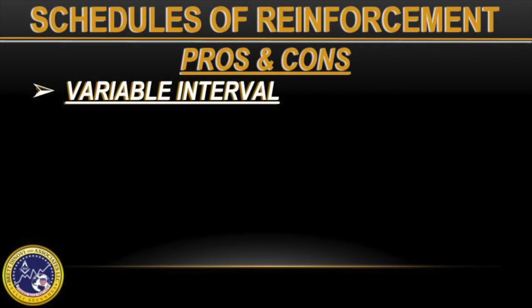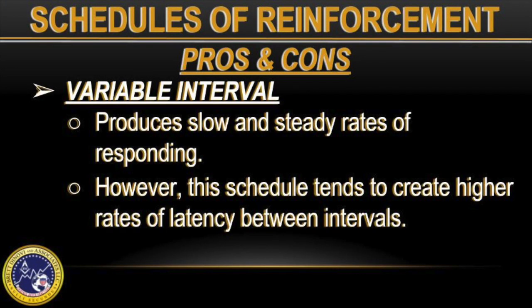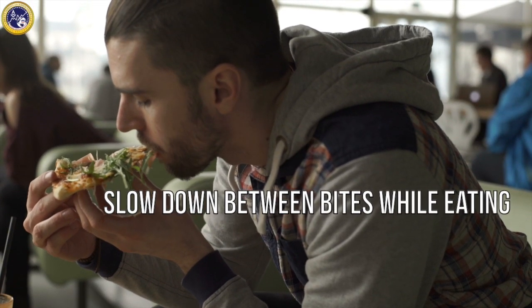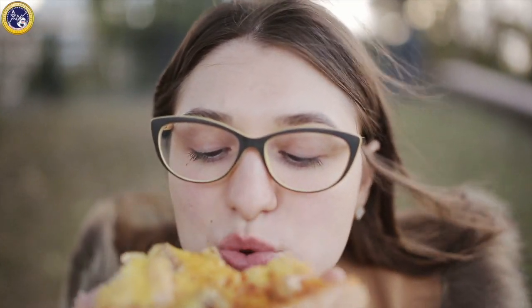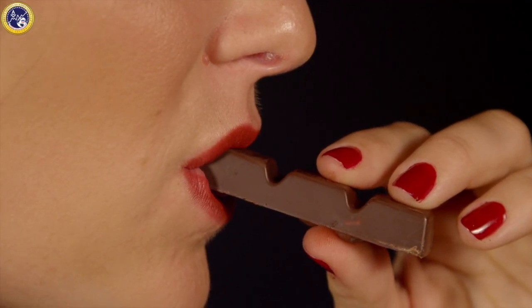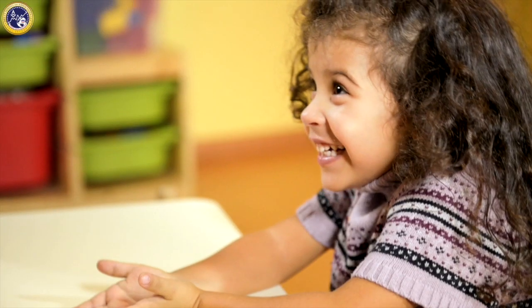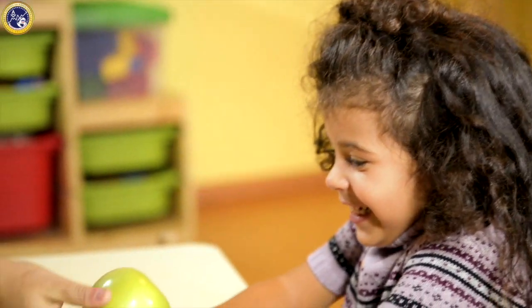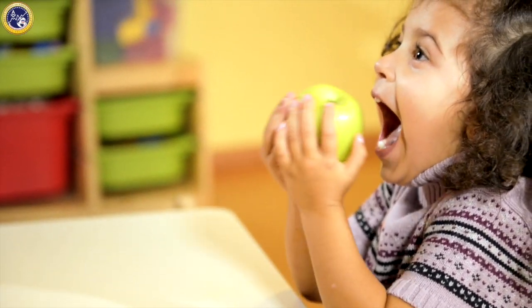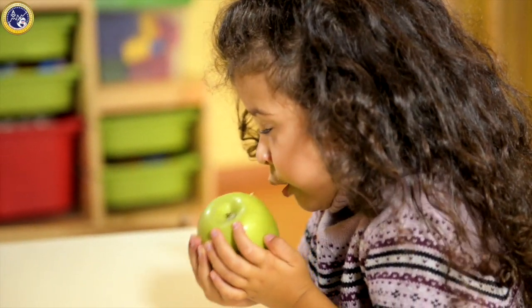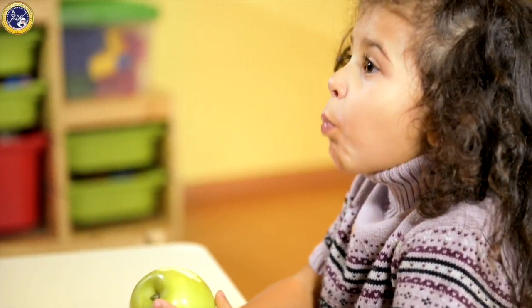A variable interval schedule is great when we need slow and steady rates of responding. Typically you'll use this with a learner who you want to slow down between bites while eating. If someone is taking bites and not chewing fully before swallowing, you can introduce this type of schedule, and they will respond periodically because they have no clue when that next piece of reinforcement is going to come — but they won't be doing it rapidly like they would on a variable ratio schedule.